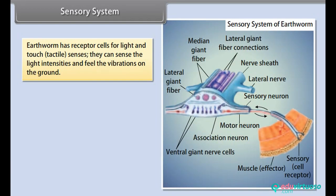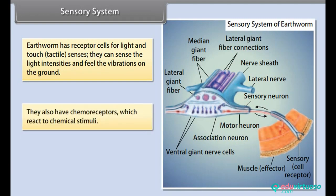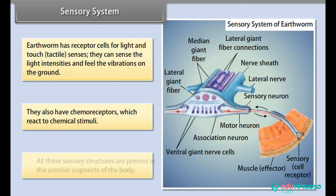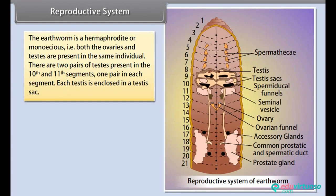Earthworm has receptor cells for light and touch — tactile senses. They can sense light intensities and feel vibrations on the ground. They also have chemoreceptors which react to chemical stimuli. All these sensory structures are present in the anterior segments of the body.